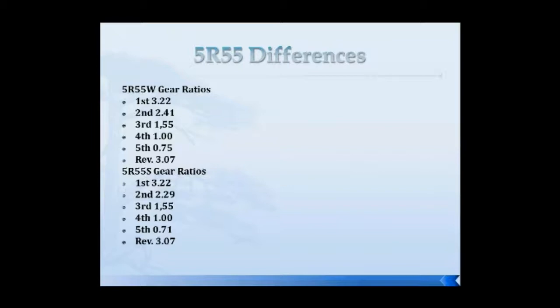There are differences in gear ratios between the different transmissions, regardless of what a supplier may have told you. Looking at a comparison chart for the 55W and 55S, the gear ratios are different. That means the overdrive planetary that keeps failing in the Ws is not the same planetary as in the S. If you try to interchange them, you could get a hard shift complaint — like a hard 2-3 shift — because the adaptive strategies are trying to adapt out of the ratio error. You could also get a ratio error code or a torque converter clutch code.